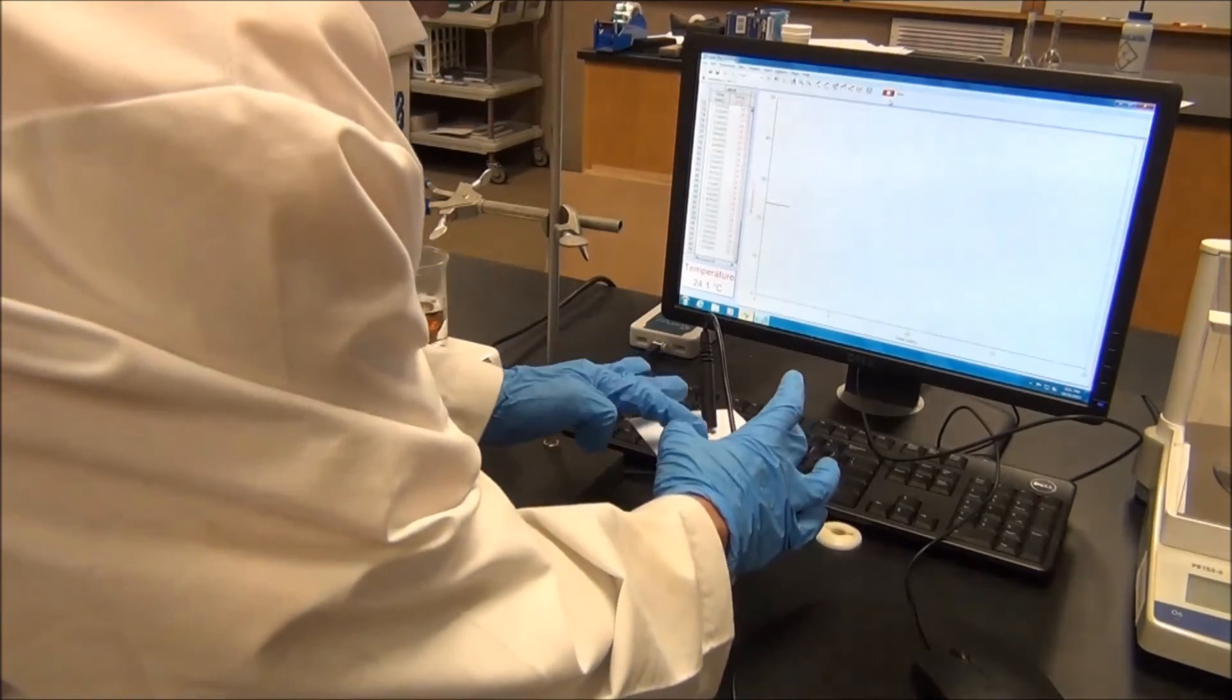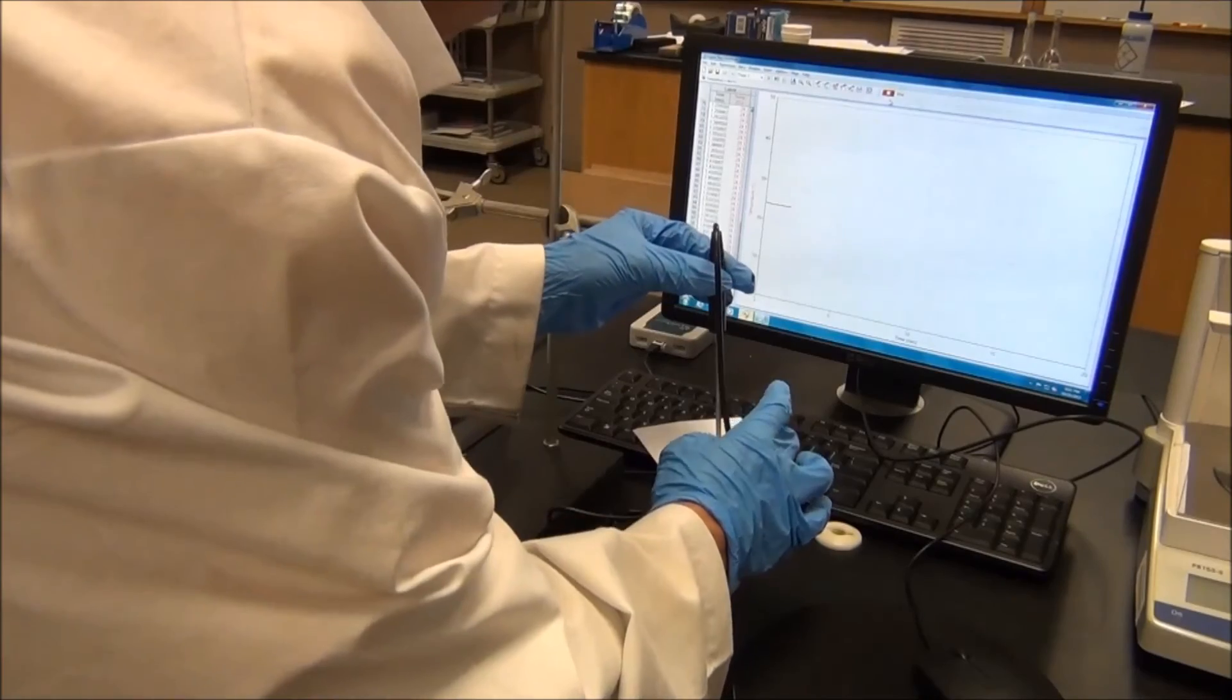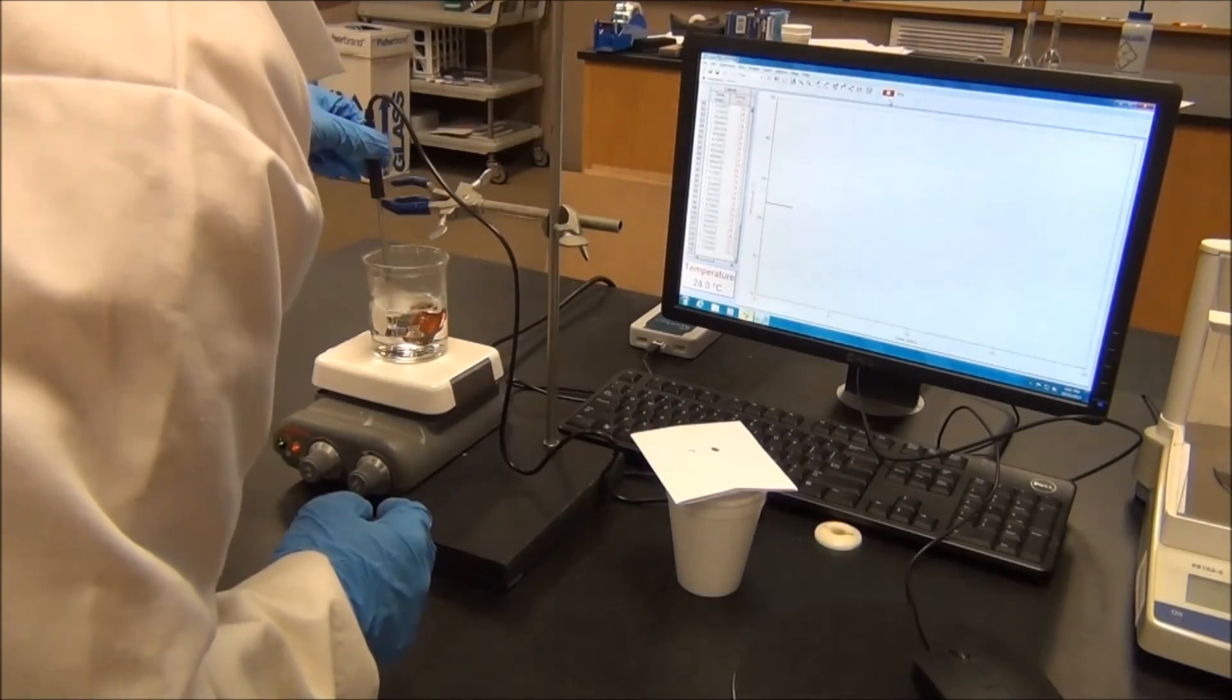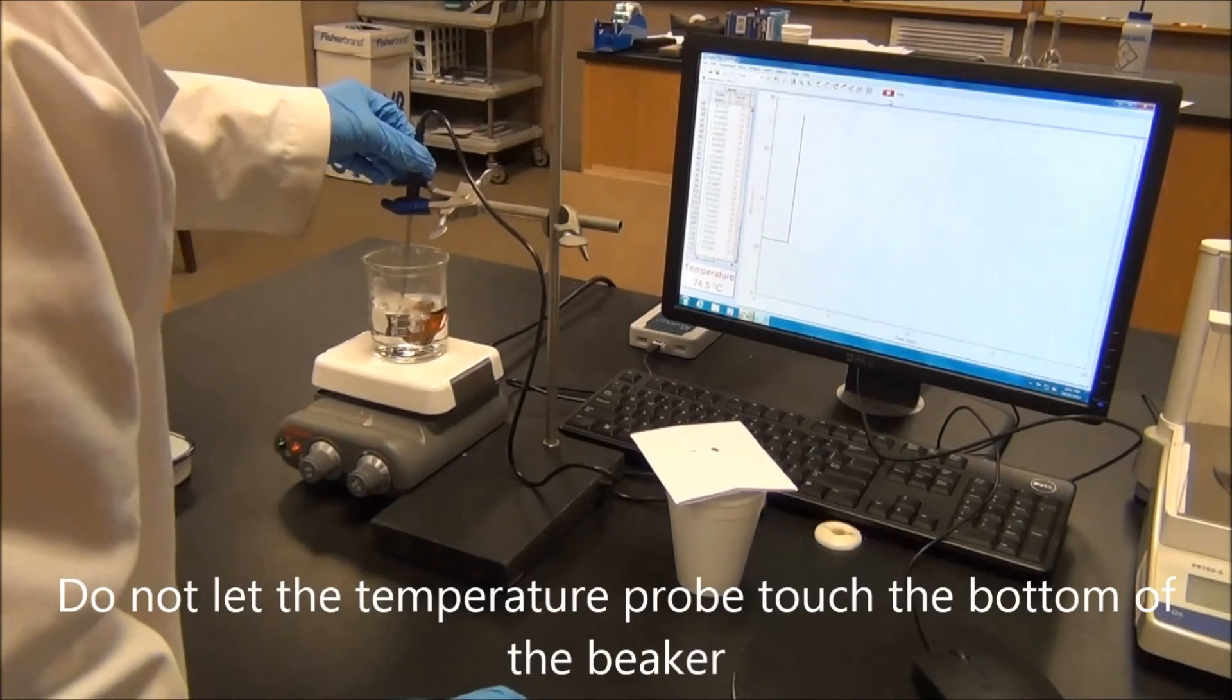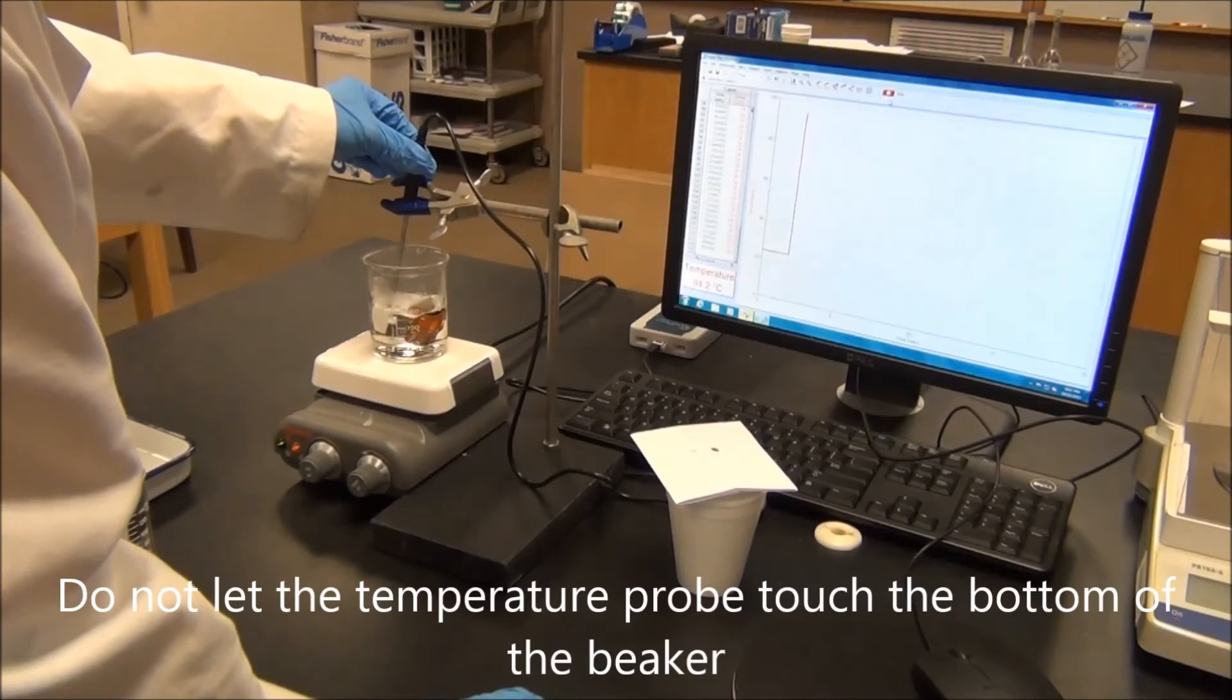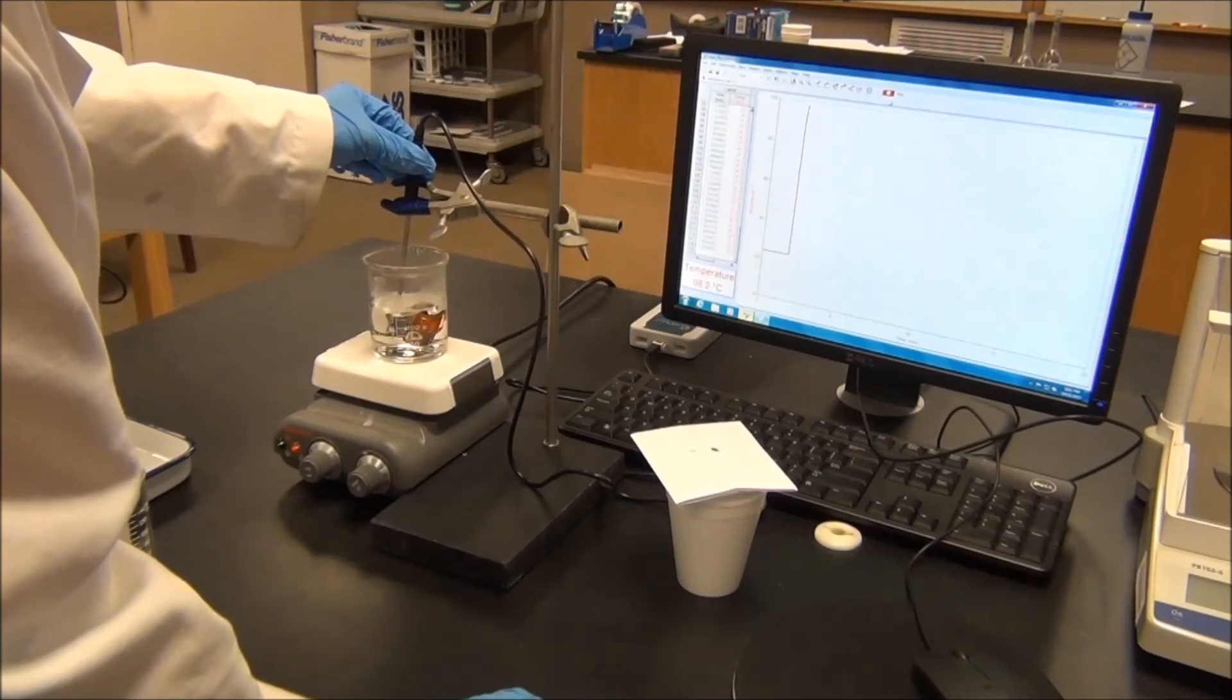Next, we need to know the initial temperature of the metal piece. So we take out the temperature probe and put it into the glass beaker. You can see from the screen, the temperature is rising. We will need to wait until the temperature is becoming constant.